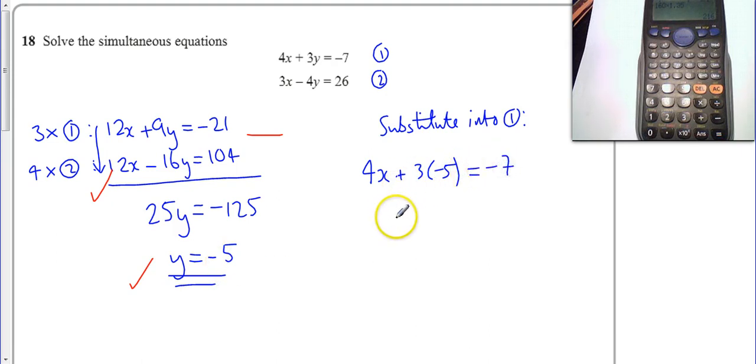So I've now turned this into a linear equation. 4x minus 15 is minus 7, or 4x equals 8 if I add 15. This tells me that x equals 2.